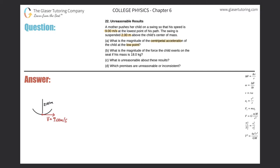Now we have to find centripetal acceleration. The formula we'll use: centripetal acceleration is equal to the linear velocity squared divided by the radius. This is really very straightforward — just plug it in. So nine squared over 2.00 gives us 40.5 meters per second squared.